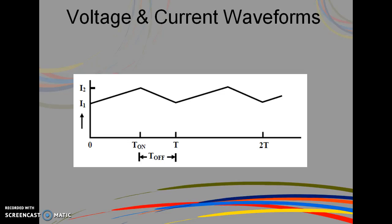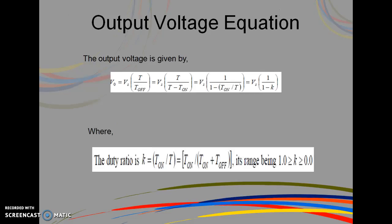Similarly, the current varies linearly from I2 to I1 during the time interval T off. Using the expression, I2 minus I1 equals I max minus I minimum equals (Vo minus Vs) divided by L times T off. While equating these two equations, we'll get Vo equals Vs times 1 divided by (1 minus K).